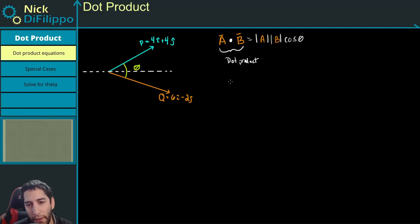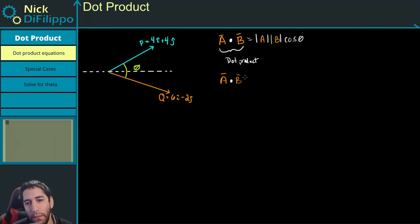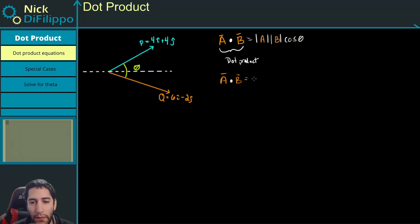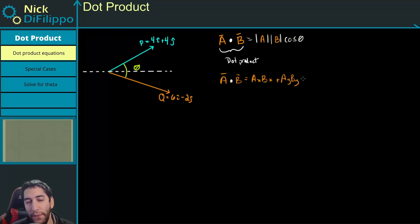We have another definition of the dot product. A dot B is equal to the components of the different vectors: Ax times Bx, plus Ay times By. And if we were in 3D, we'd have plus Az times Bz.